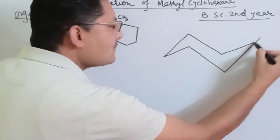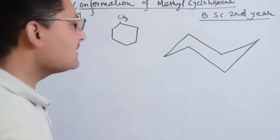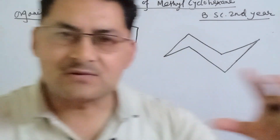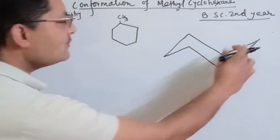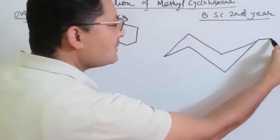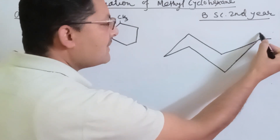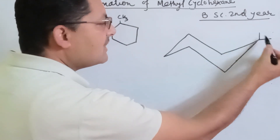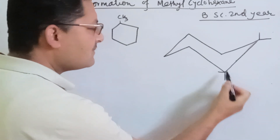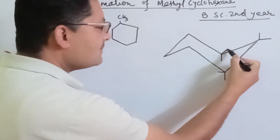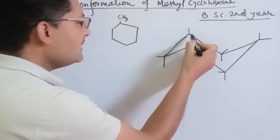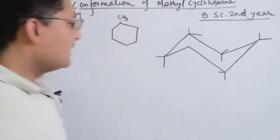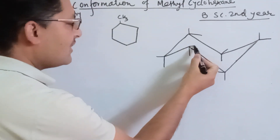So cyclohexane — the most stable form of cyclohexane. You can see two bonds in each corner.